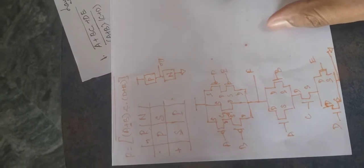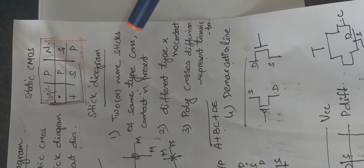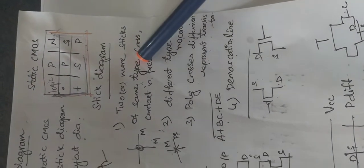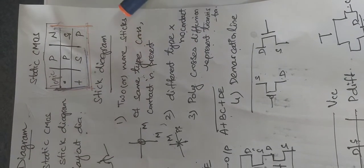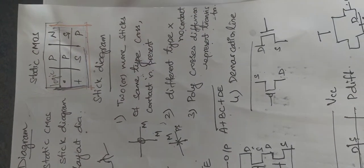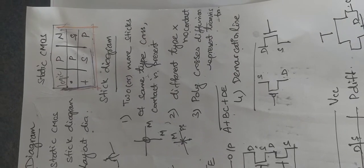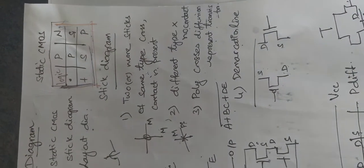We have marked the source and drain terminals, so step two is completed. Before drawing the stick diagram, we need to know some of the rules. There will be many layers you have to use when drawing a stick diagram. The different types of layers present are as follows.